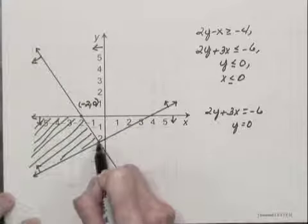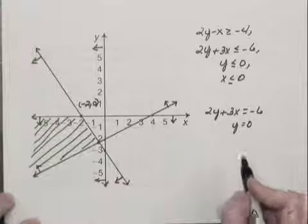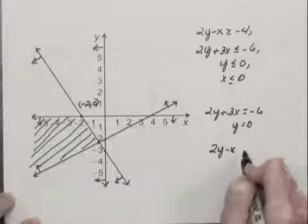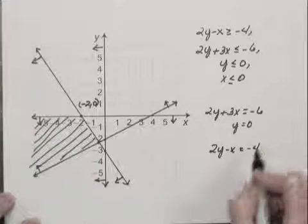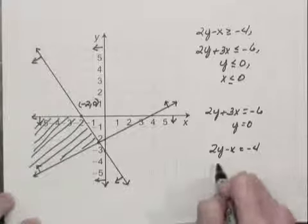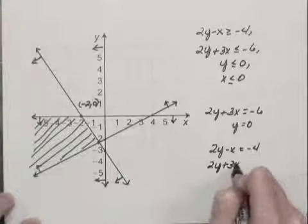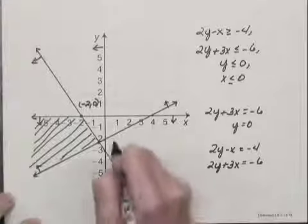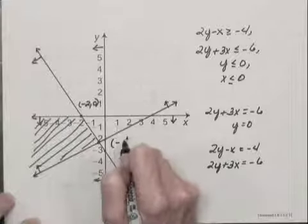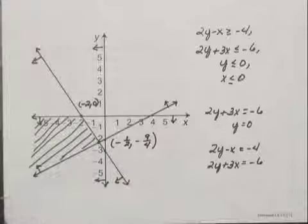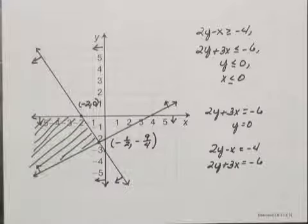And to find the coordinates of this vertex, I would solve the system of equations 2Y minus X equals negative 4 and also I would add in the system 2Y plus 3X equals negative 6. And when I solve this system of equations, I get the ordered pair negative 1 half, negative 9 fourths. So those are the coordinates of the second vertex.